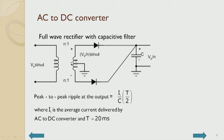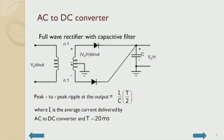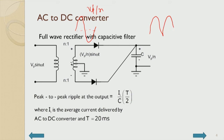The voltage waveform goes up to VP/N. The diode conducts for the positive half, and the negative half is pumped in the same positive direction, resulting in a full-wave rectified output.